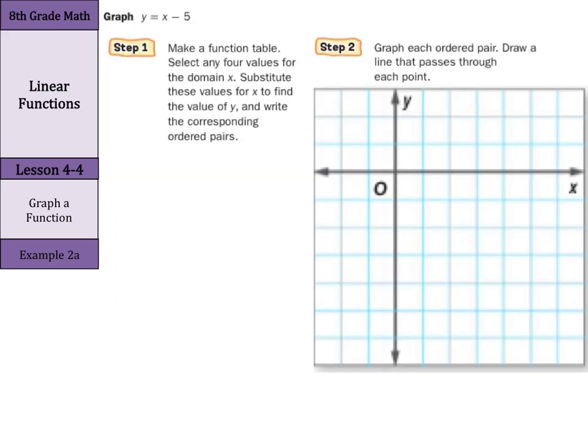Let's graph the function y = x - 5. Now, here we want to make a function table. We'll select any four values for the domain x. Substitute these values for x to find the value of y and write the corresponding ordered pairs. So, once again we'll have x. In our middle, we can write our x - 5 so we can see how to set up our rules and y.